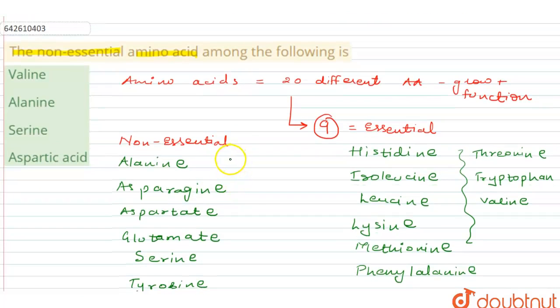So let me just write it over here, aspartic acid. So we have three amino acids which are non-essential - it's option number 2, 3 and 4. These three are non-essential whereas the first one is an essential one. So option 2, 3, 4 is the answer to our question. I hope you understood the explanation, thank you.